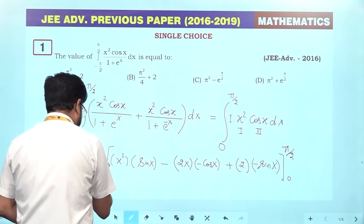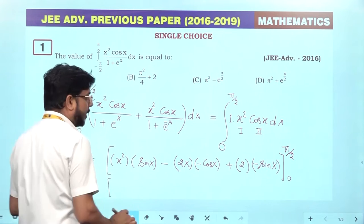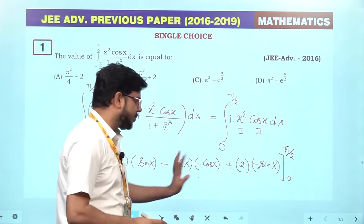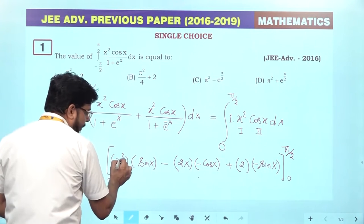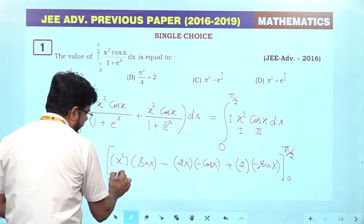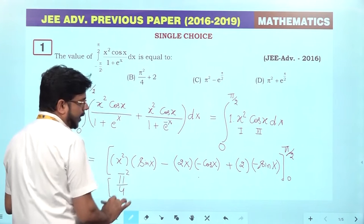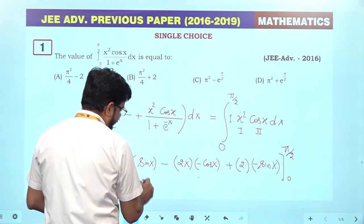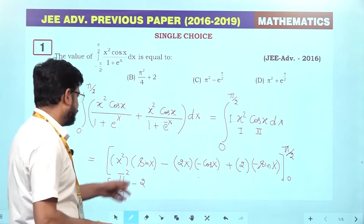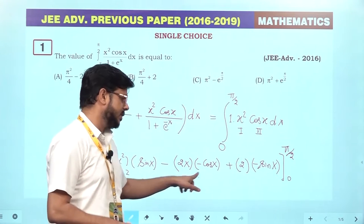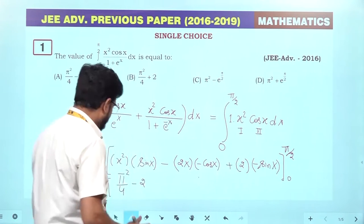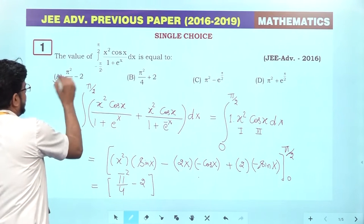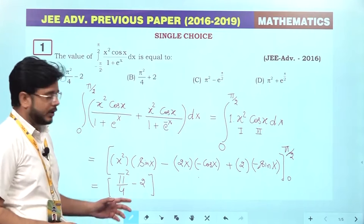After simplification with the limits, applying values and computing, we get the result. Putting x equal to zero, combining terms: pi squared by 4 minus 2. So the right answer of this question is option A. Let's go to the next question.